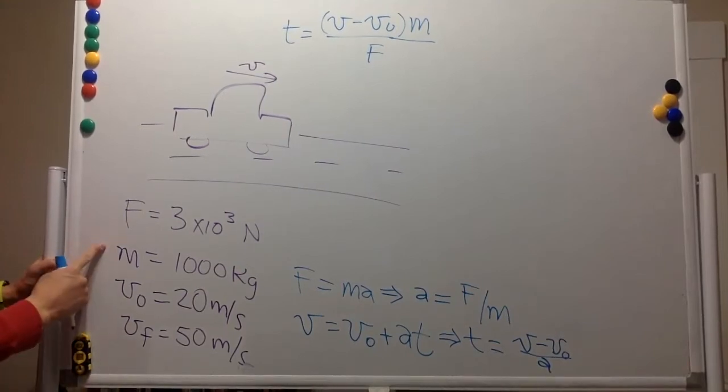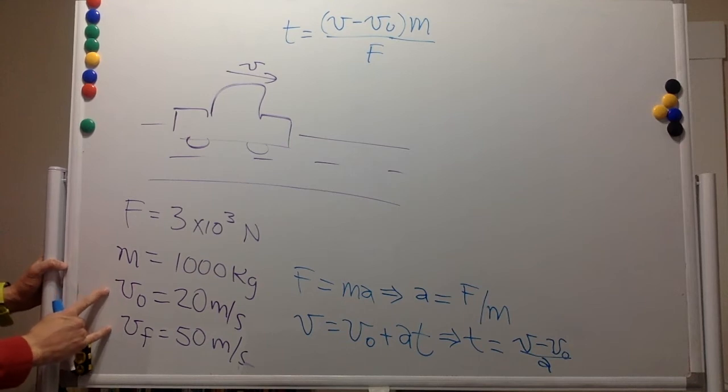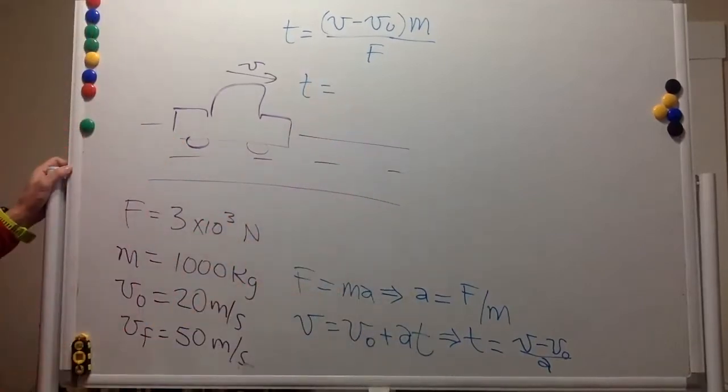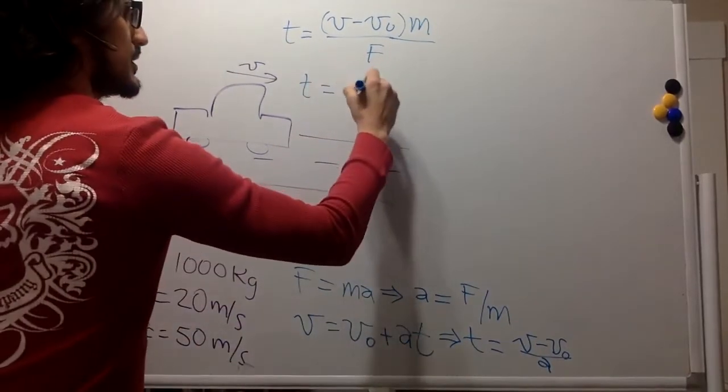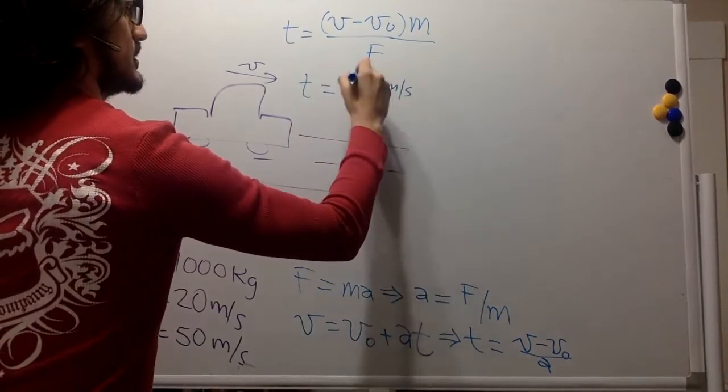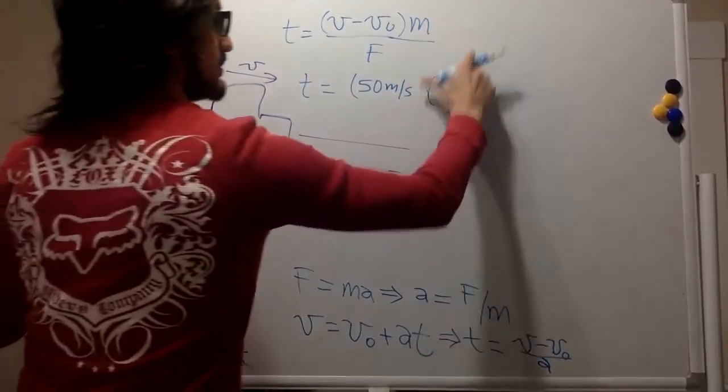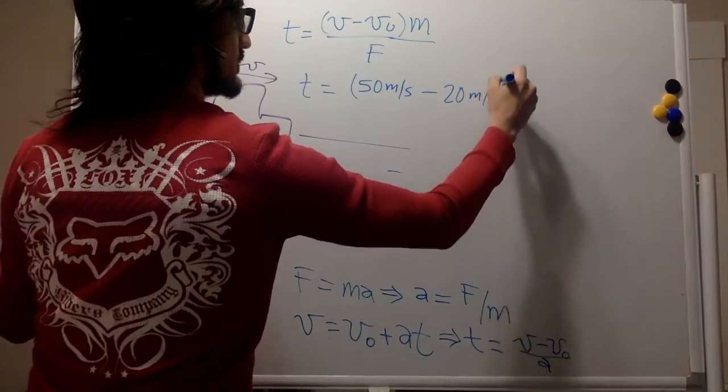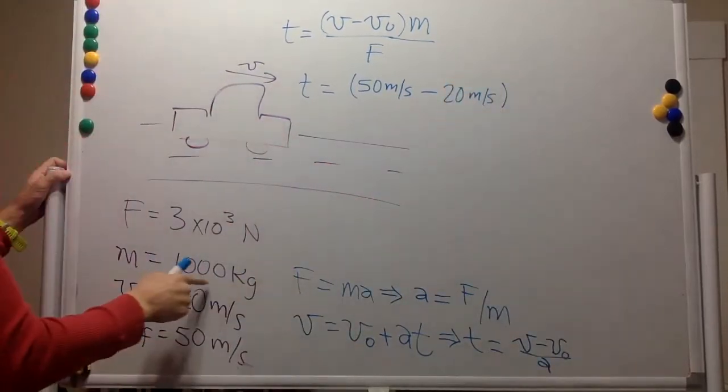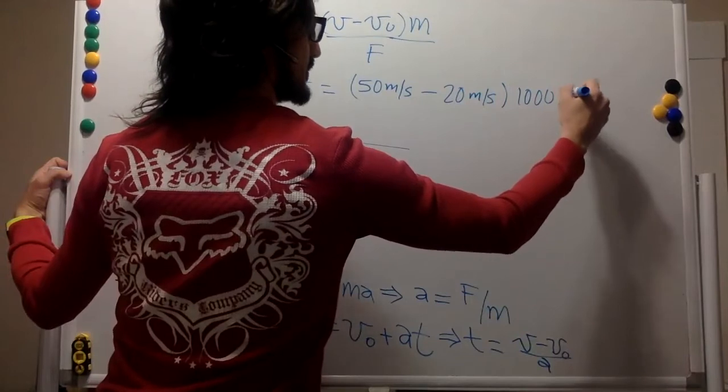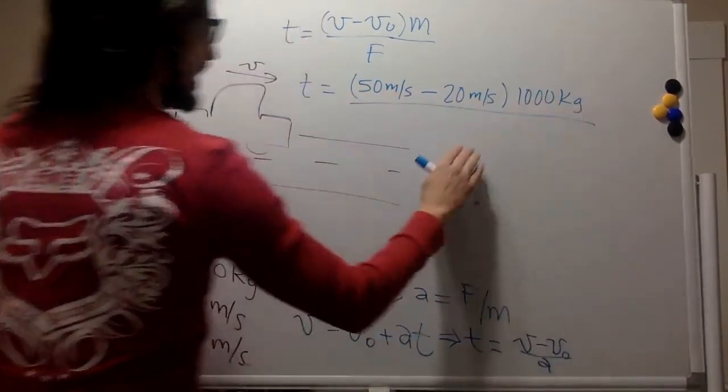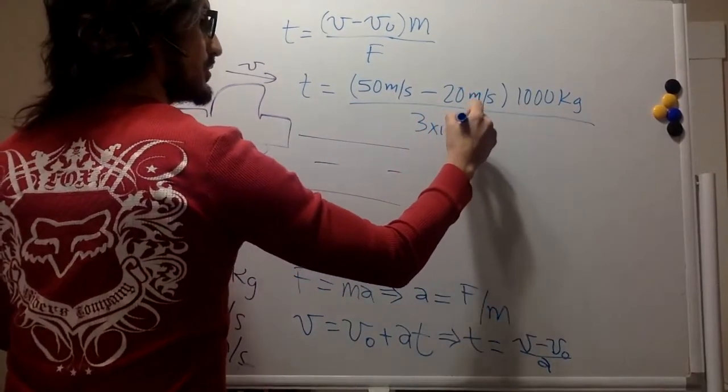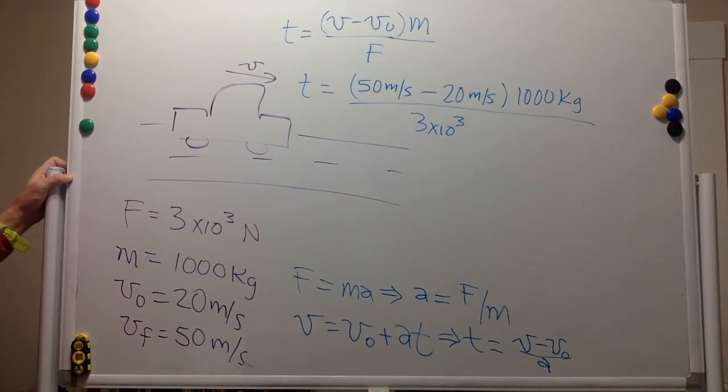We have the mass, we have the difference in velocities, and we have the force. So the time is 50 meters per second minus 20 meters per second, the mass is 1,000 kilograms, and the force is 3 times 10 to the 3, so 3,000 newtons.